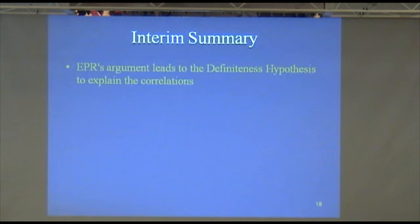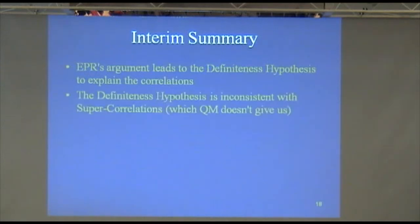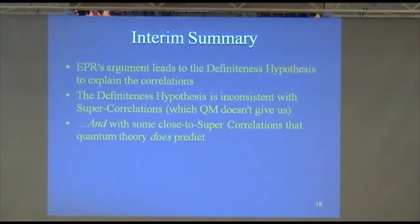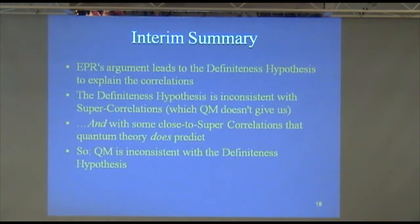Now, here's a little interim summary then, just to say what I said again. EPR noticed these funny correlations, and they give an argument that leads to the definiteness hypothesis. It would make sense of these correlations. The definiteness hypothesis is inconsistent with the super correlations we talked about. Quantum mechanics doesn't give those. And by a little extra argument that I didn't go through, it's also inconsistent with close to super correlations, and quantum mechanics does predict those. So, quantum mechanics doesn't fit with the definiteness hypothesis. But now we've got a puzzle.